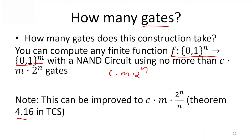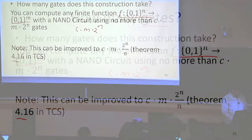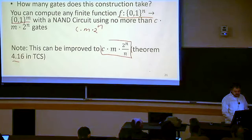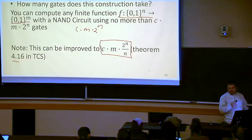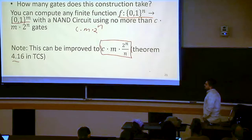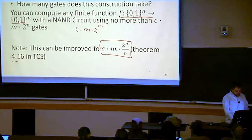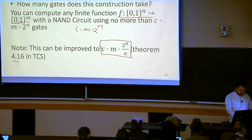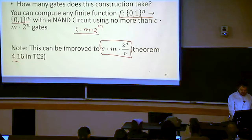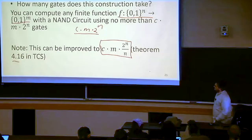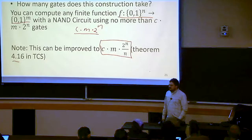Your book, by the way, Theorem 4.16, provides a tighter bound than I do that requires a little bit more care than I'm going to do in class. But just know that that bound can be shrunk. So this procedure can certainly implement any function in some constant, whatever c is, times m times 2 to the n gates.